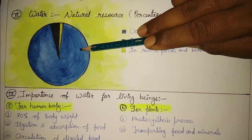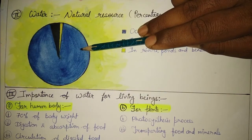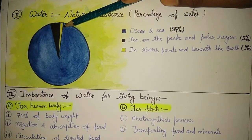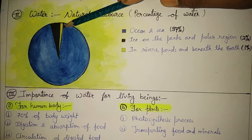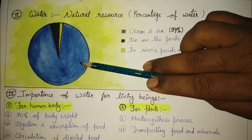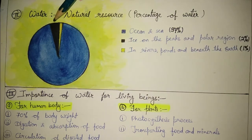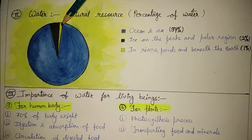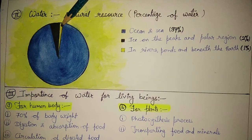Look here — this blue color represents water present in oceans and seas, this black color represents water found in mountain peaks and polar regions, and this yellow color represents water present in rivers, ponds, and under the land. So, 97 percent of water is present in oceans, 2 percent is in the form of ice on mountain peaks and polar regions, and only 1 percent is found in rivers, ponds, and under the land. So we have very less quantity of usable water.